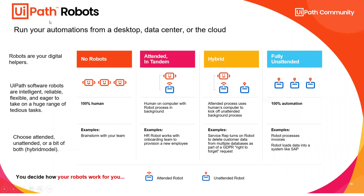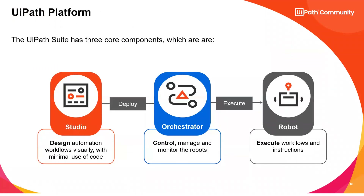What exactly are the robots? There are three major components: Studio (where you write code), Orchestrator (where you deploy and manage), and Robots (who execute the process). Just like you use Paint to draw, Excel to create spreadsheets, MS Word to write, and a browser to open websites — similarly, to execute a robot you need someone who understands it. That's the UiPath Robot.